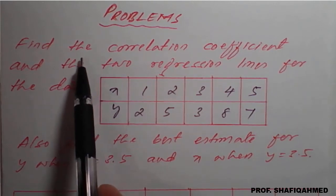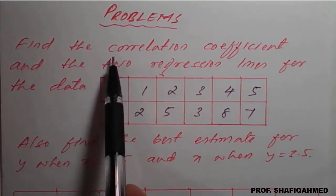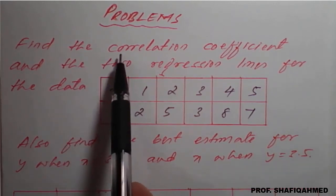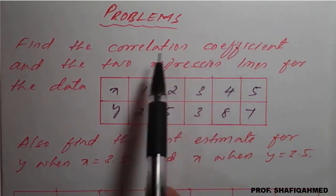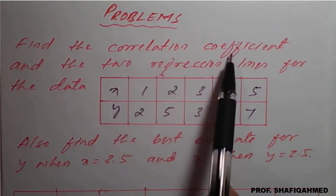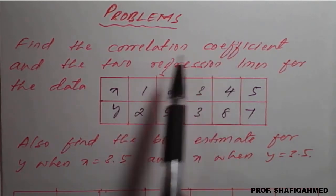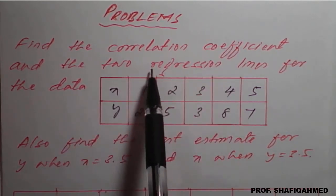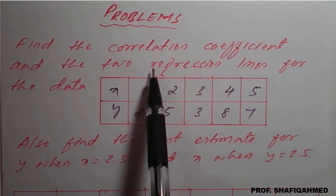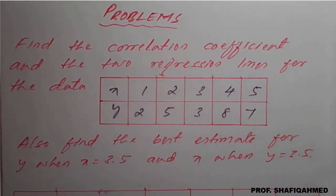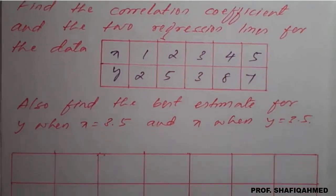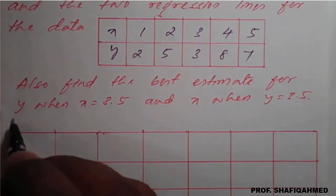First, you have to understand what they have asked. First, they have asked to find the correlation coefficient, meaning the R value. Then regression lines — regression line Y on X and X on Y — we need to find. So first we have to go for the table solution.